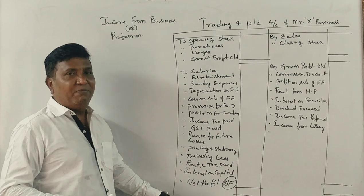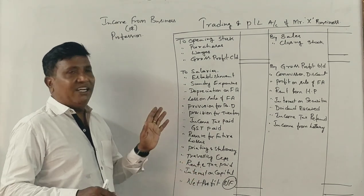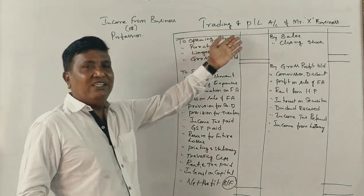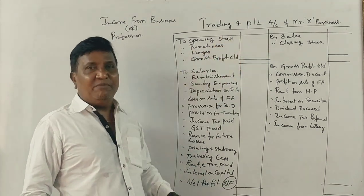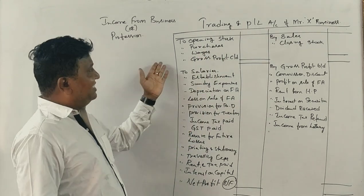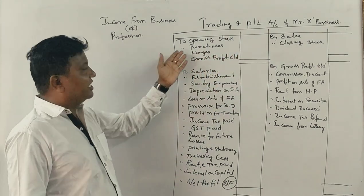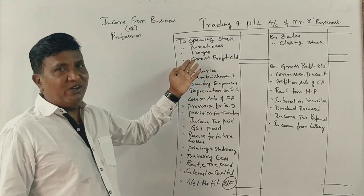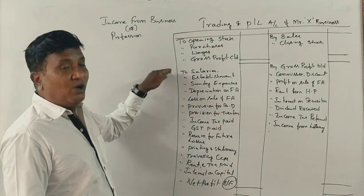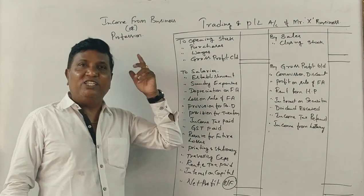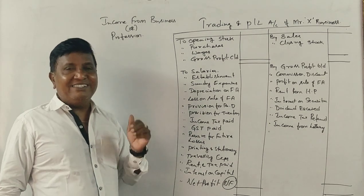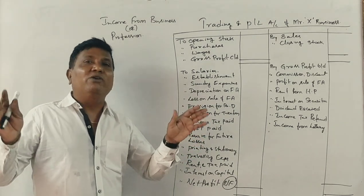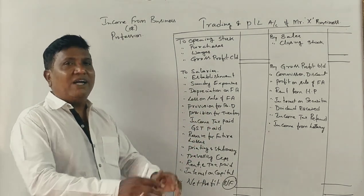The trading and profit and loss account is prepared in old format. It shows whether there is profit or loss. The format includes: opening stock, purchases, wages, carriage, freight, and other direct expenses on one side; sales and closing stock on the other side. The gross profit is carried down. Then indirect expenses are deducted. This is prepared as per GAAP — Generally Accepted Accounting Principles — and Double Entry System of bookkeeping.